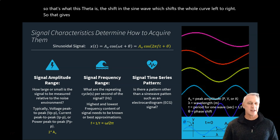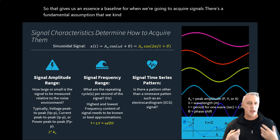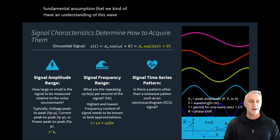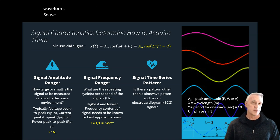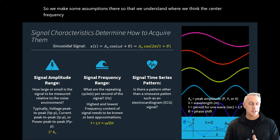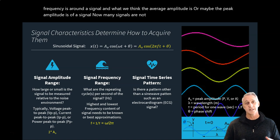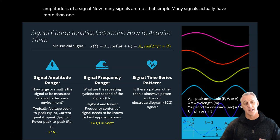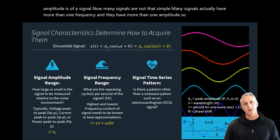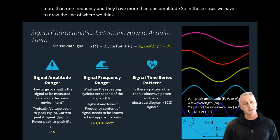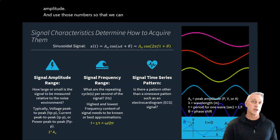This gives us a baseline for acquiring signals, with the fundamental assumption that we understand the waveform. This is a simple sinusoidal assumption, so we identify a center frequency and average or peak amplitude. Many signals, however, have more than one frequency and amplitude. In those cases, we use the maximum frequency and maximum amplitude when designing our digital conversion system.